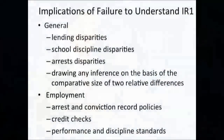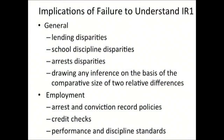Some implications of the failure to understand this interpretive rule include lending disparities. For at least 20 years, the federal government has been encouraging lenders to relax lending standards in order to reduce the several-fold differences in mortgage rejection rates. But relaxing lending standards tends to reduce relative differences in approval rates while increasing relative differences in rejection rates. Unaware of the latter fact, the government continues to monitor the fairness of practices based on relative differences in adverse outcomes — so lenders who follow government encouragement to relax standards tend to increase the chances that the government will sue them for discrimination.